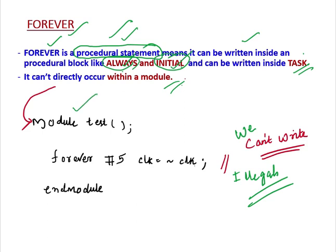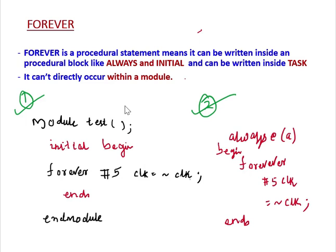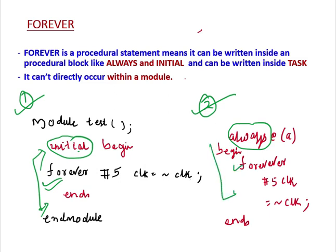For example, if you directly write Forever inside a Module without a Procedural Block, it will show you an Error — it is illegal. So what we have to remember is this Forever has to be written inside an Always Block, Initial Block, or inside a Task. If you write it inside an Initial Block or an Always Block, it is not going to show you an Error — that code is correct.